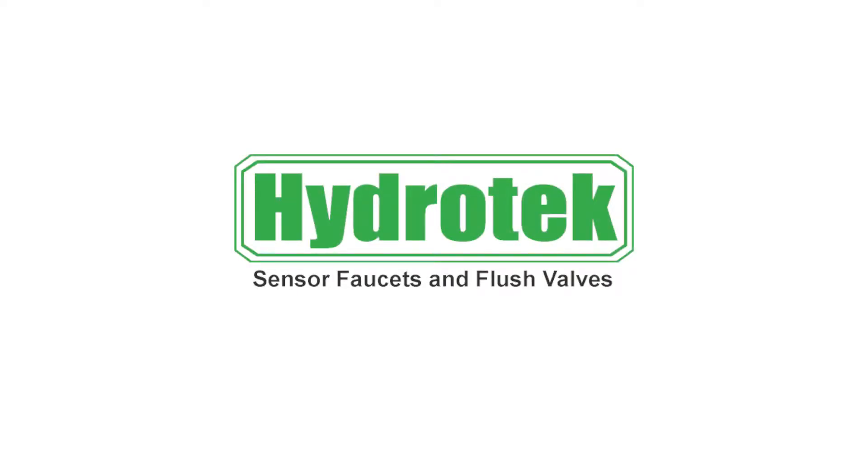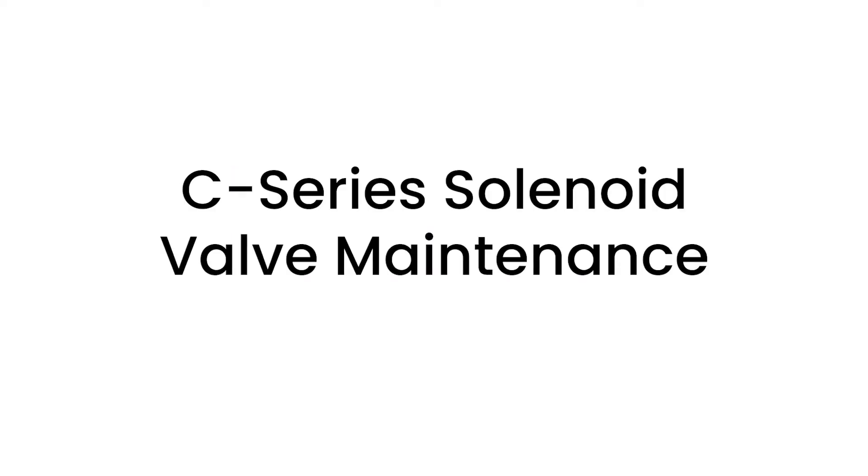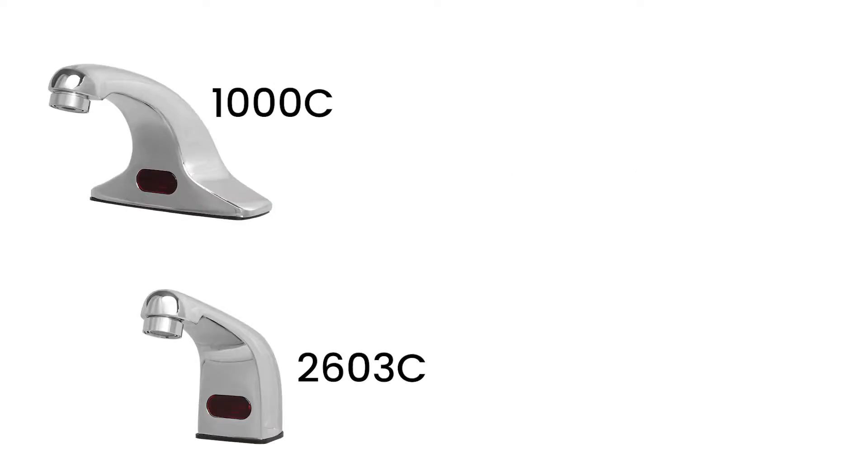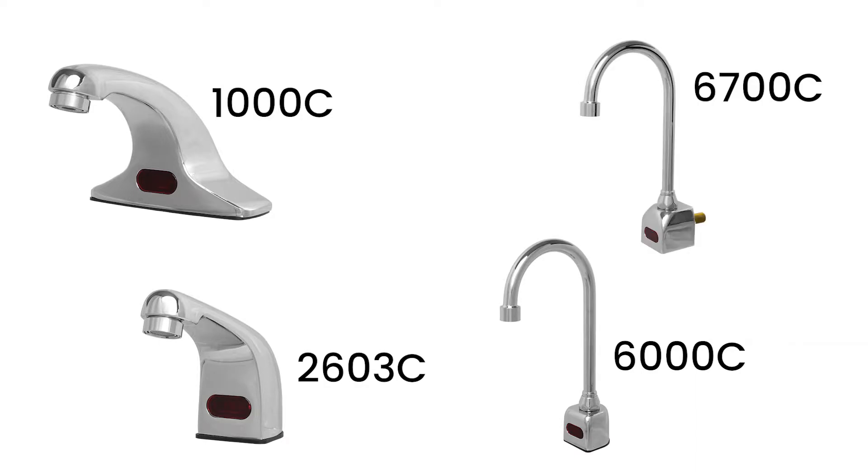This video will show you how to service the solenoid valve assembly of a HydroTek C-Series faucet. This maintenance can be applied to the 1000C, 2603C, 6000C, and 6700C faucets.